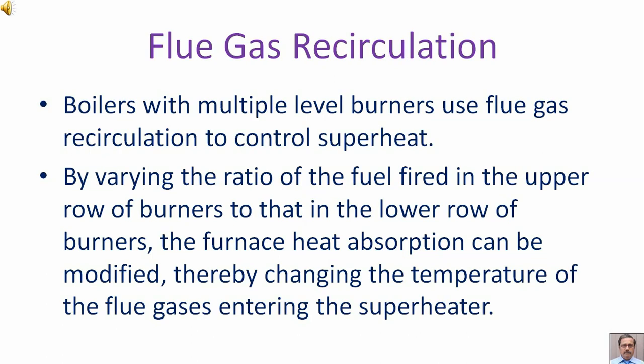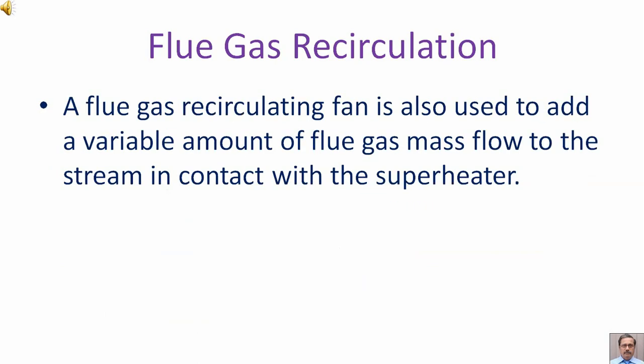Flue gas recirculation. Boilers with multiple level burners use flue gas recirculation to control superheat. By varying the ratio of the fuel fired in the upper row of burners to that in the lower row of burners, the furnace heat absorption can be modified, thereby changing the temperature of the flue gases entering the superheater. A flue gas recirculating fan is also used to add a variable amount of flue gas mass flow to the stream in contact with the superheater.